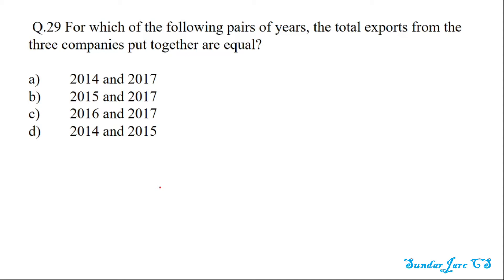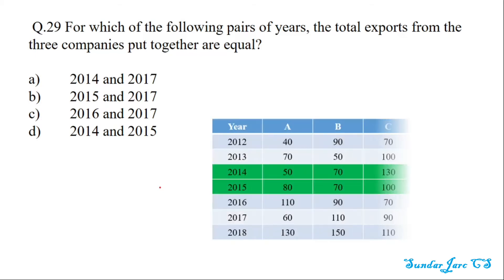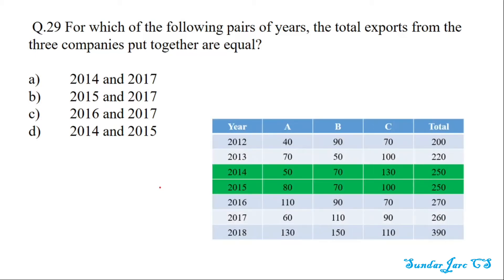For Q29 — for which pair of years were the total exports from the three companies put together equal — we calculate the combined total for each pair of years. The total for 2014 and 2015 are both 250 crore, so the answer is 2014 and 2015.